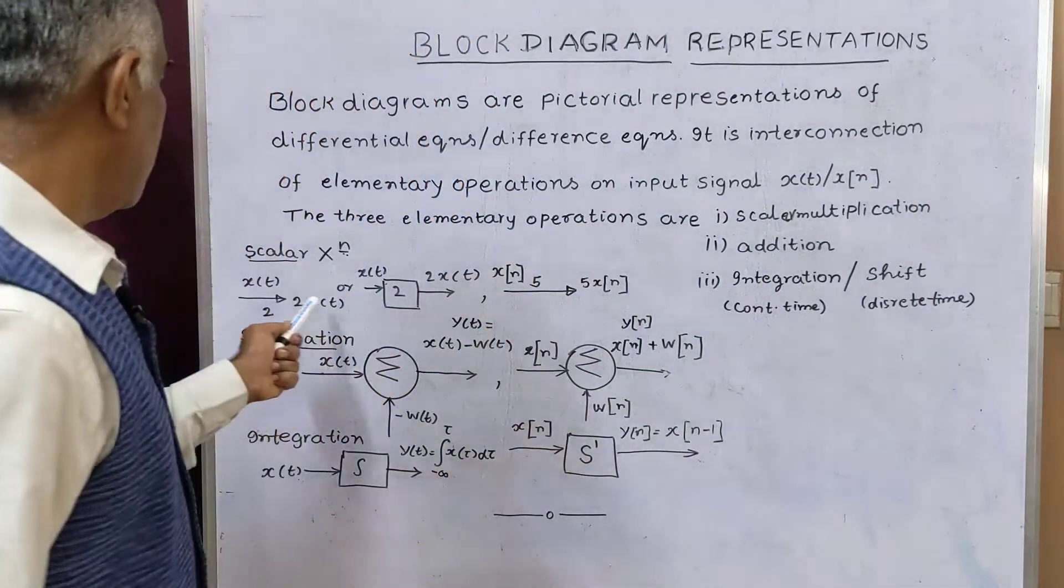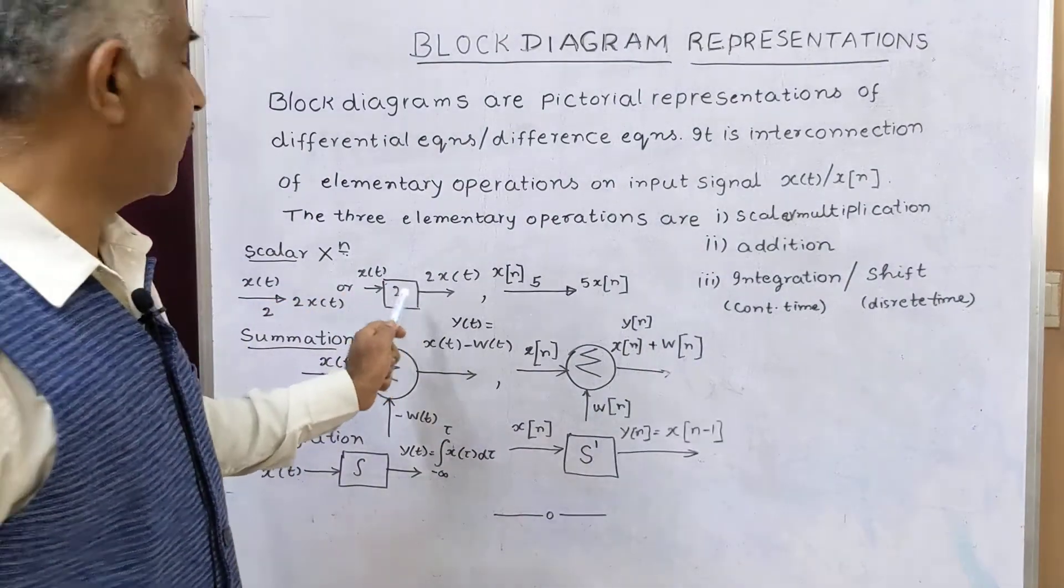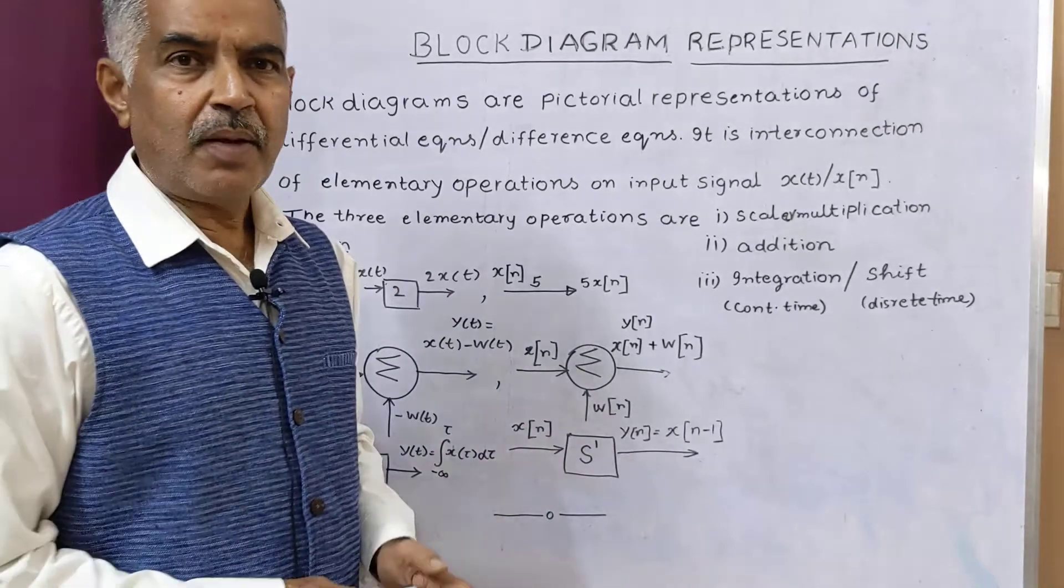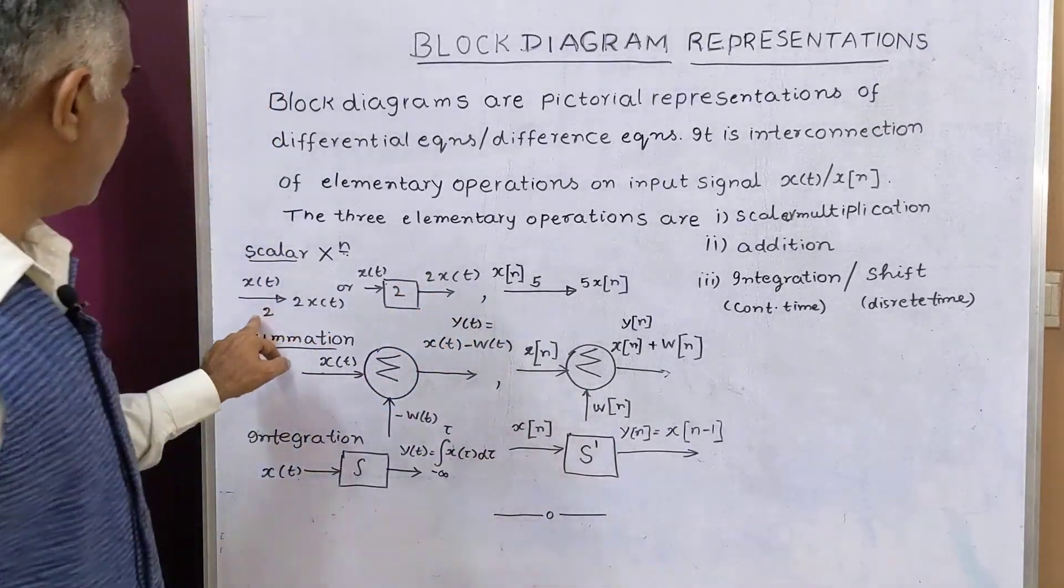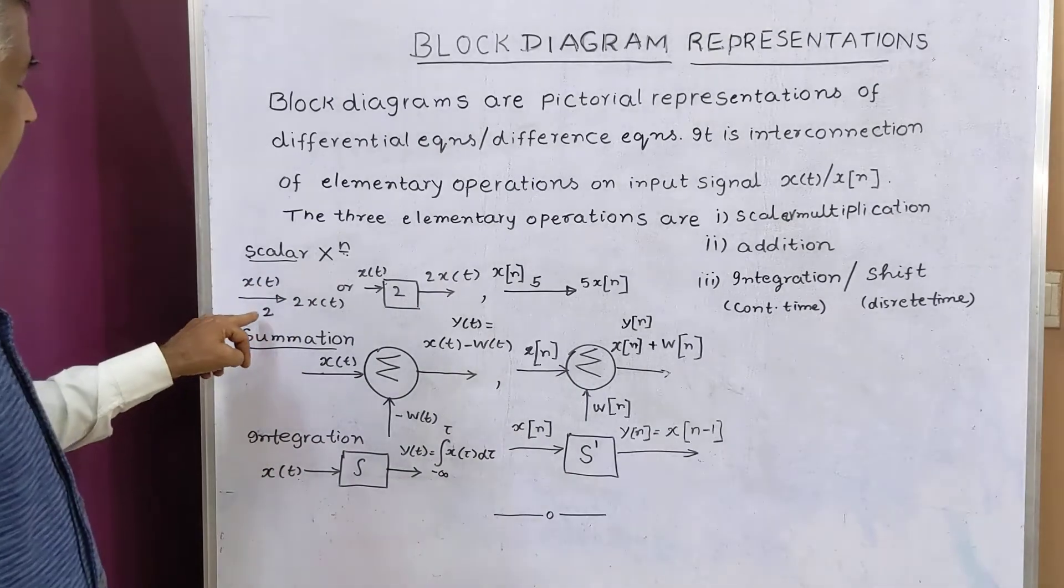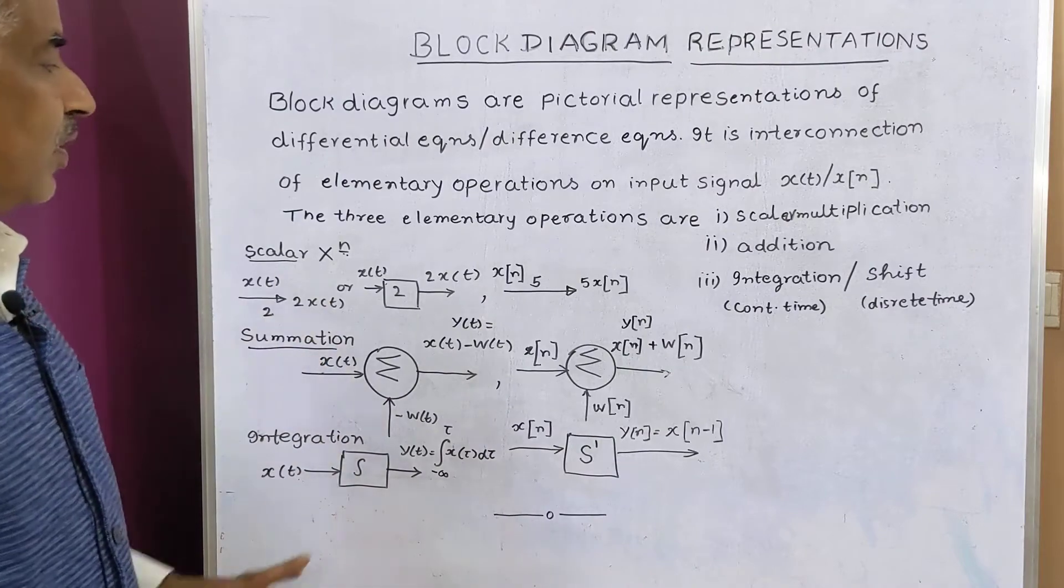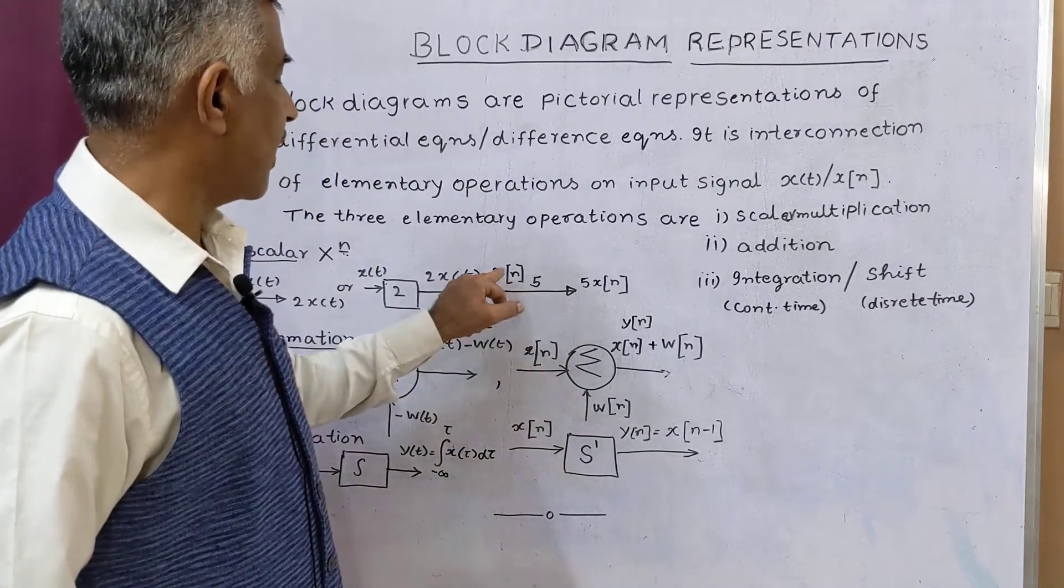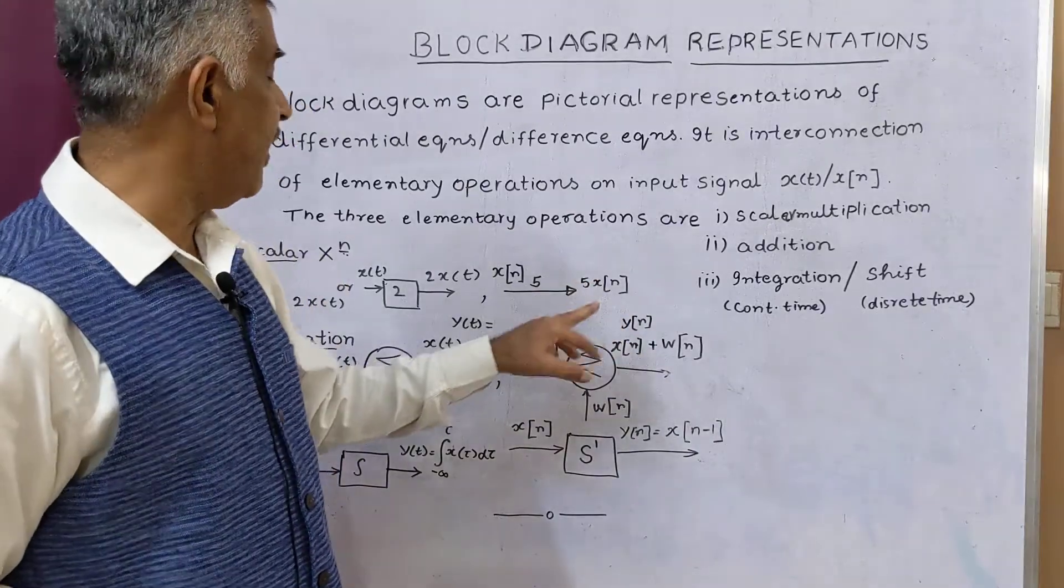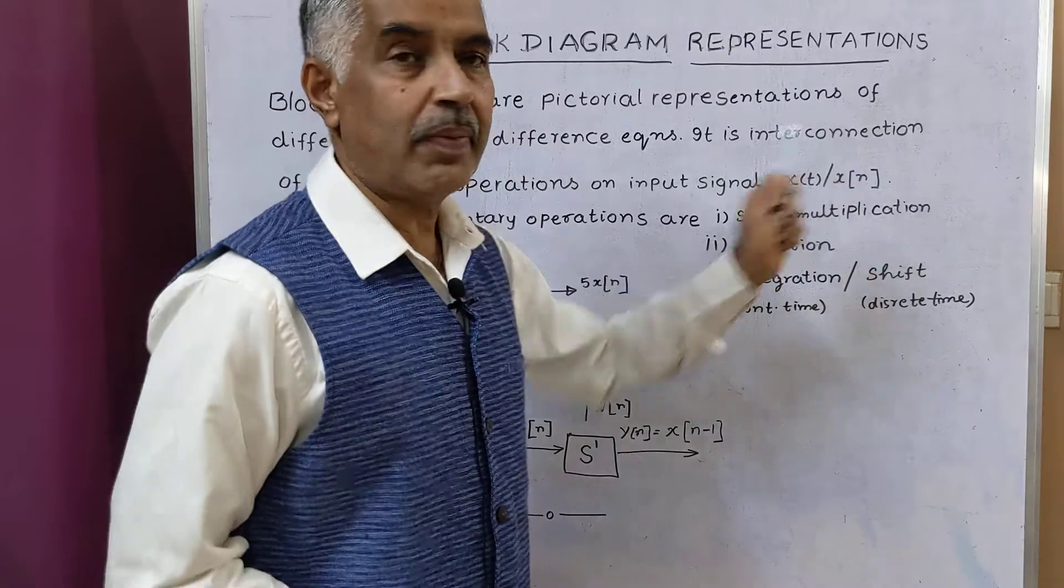I have shown here, x(t) is given to a block of two. Two is a constant. It becomes 2x(t). Sometimes the block is not shown or simply it is written two below this line. If it is written two, that means two gets multiplied with x(t). In the case of discrete time system, it is five times x[n]. So five, two, they are all scalars. This is scalar multiplication.